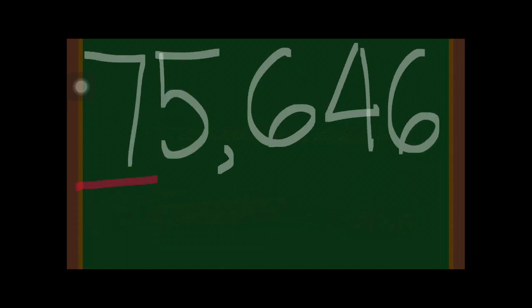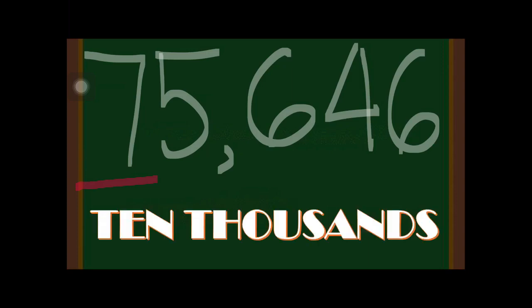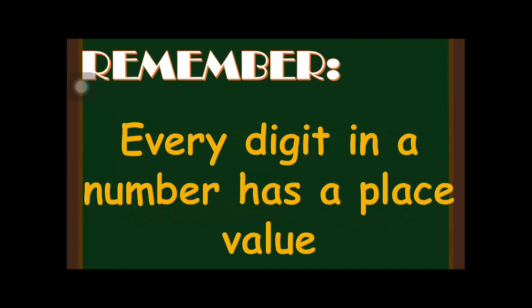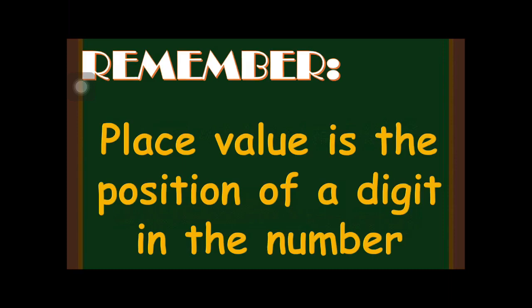Digit 7 is the fifth digit from the right, so its place value is the ten thousands place. Always remember, children: every digit in a number has a place value, and place value is the position of a digit in the number.